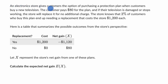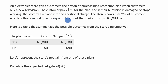We're told that an electronic store gives customers the option of purchasing a protection plan when customers buy a new television. That's actually quite common. The customer pays $80 for the plan, and if their television is damaged or stops working, the store will replace it for no additional charge. The store knows that 2% of customers who buy this plan end up needing a replacement that costs the store $1,200 each. Here's a table that summarizes the possible outcomes from the store's perspective.